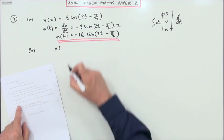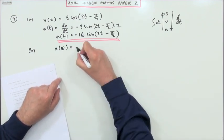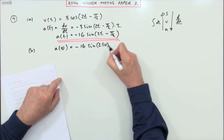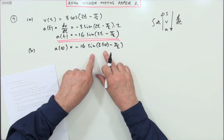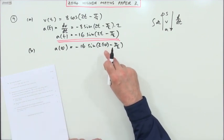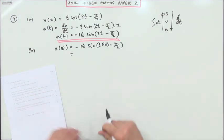What is the acceleration? Well, at t equals 10, the acceleration will be negative 16 sin(2 times 10 - π/2). And remember, in differentiation integration, the angles are measured in radians. So before you evaluate this, make sure you set your calculator to radians.